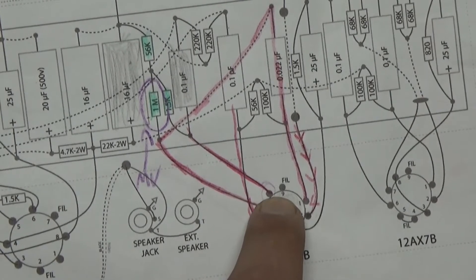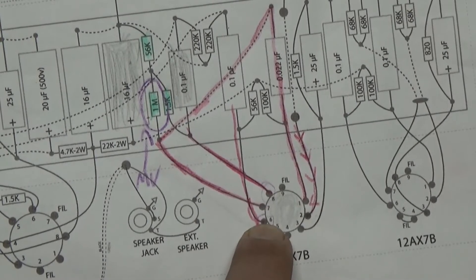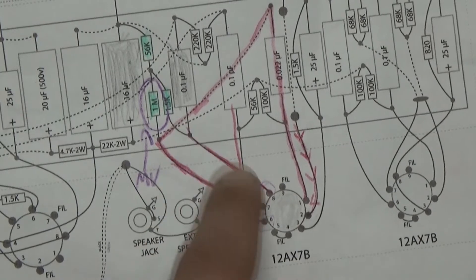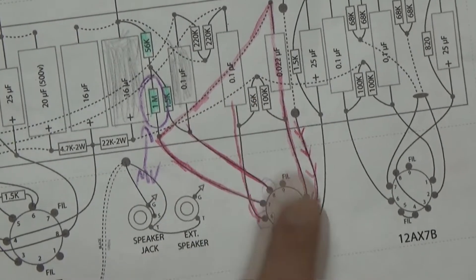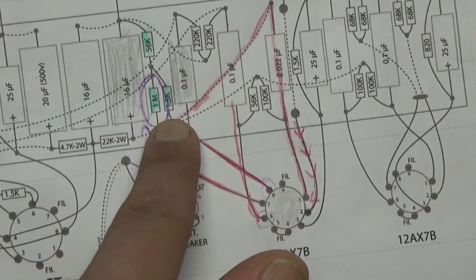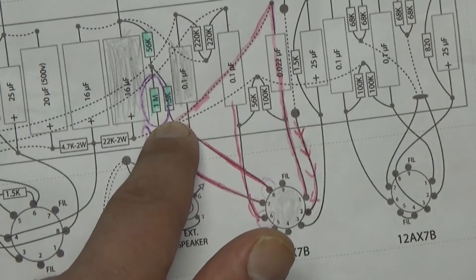It goes into the grid here in pin 7 and it comes out two places. It comes out of pin 8, which is the cathode, and pin 6, which is the plate. The cathode is the non-inverted signal and the plate is the inverted signal. So what we're going to do to control this signal coming in here is we're going to replace this with an audio pot.